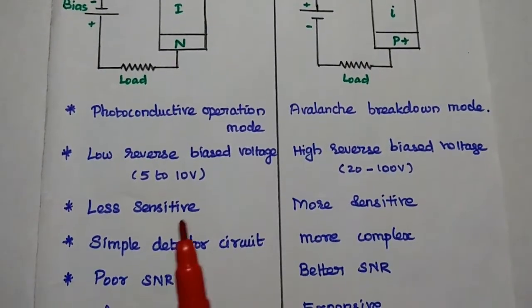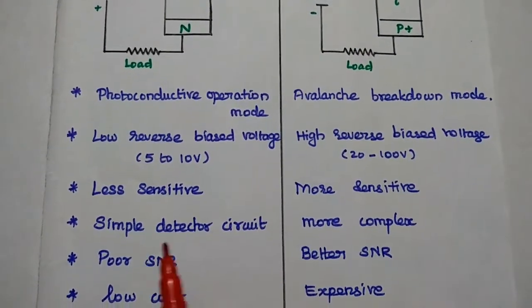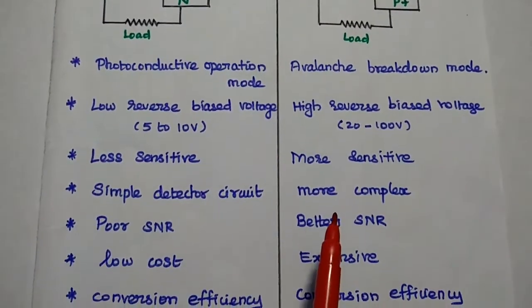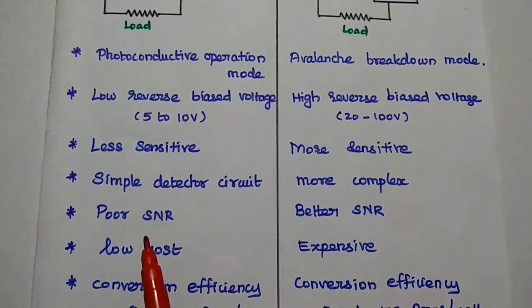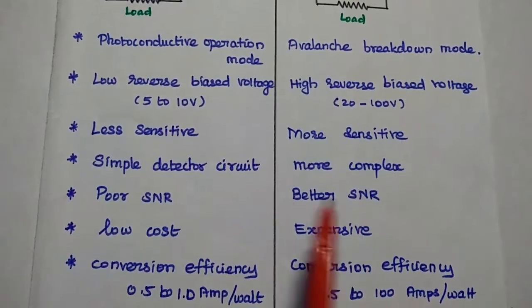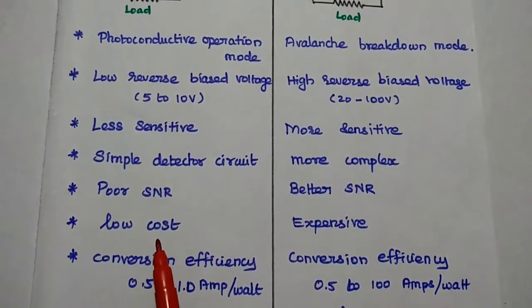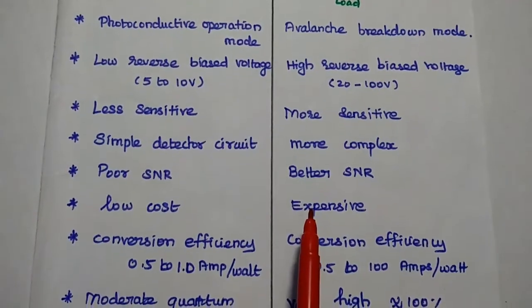So here it is less sensitive device, it is more sensitive. It is simple circuit, it is more complex circuit. It has poor signal to noise ratio, it has better signal to noise ratio when compared with this PIN photodiode. It is a low cost device, it is expensive one.